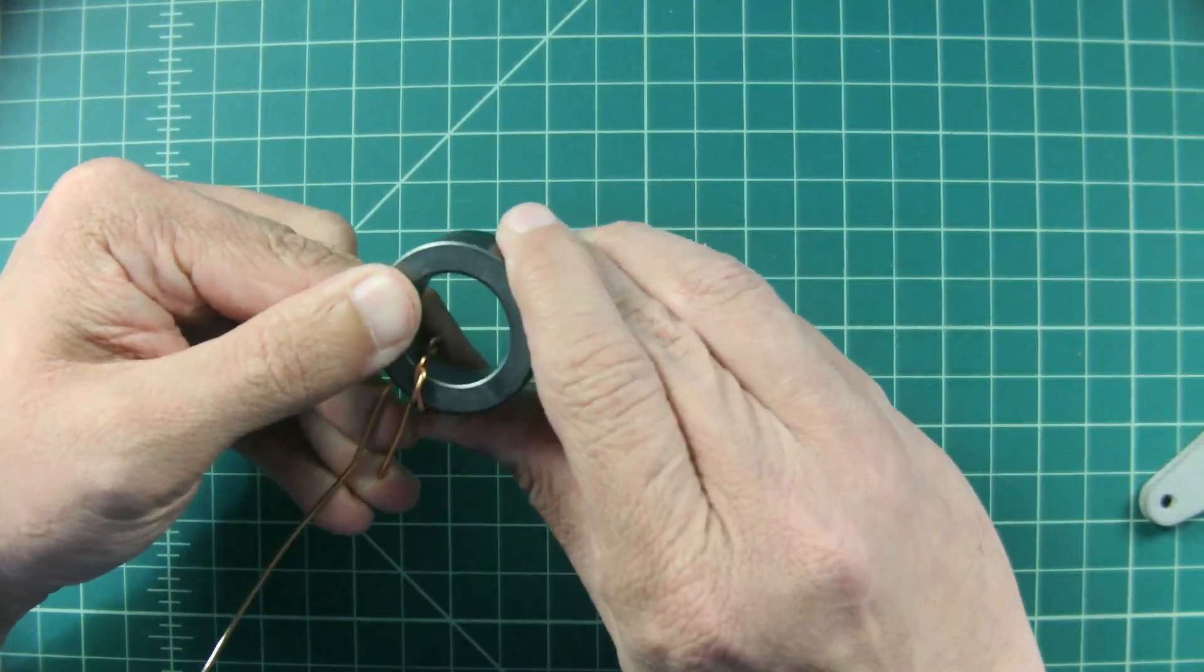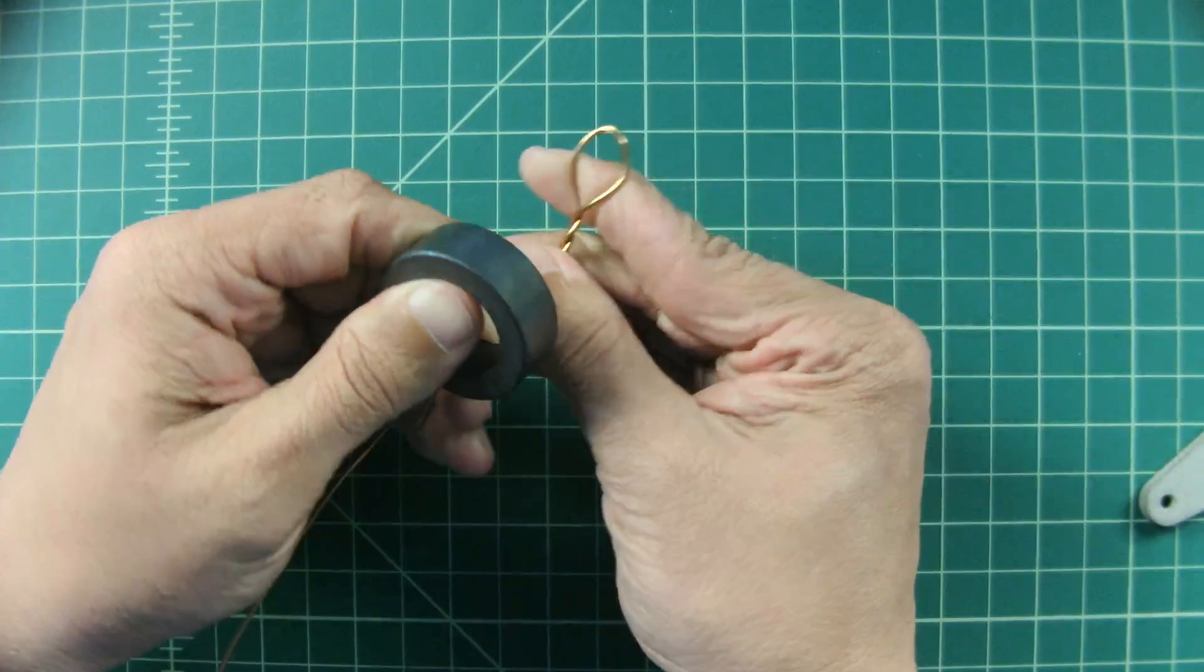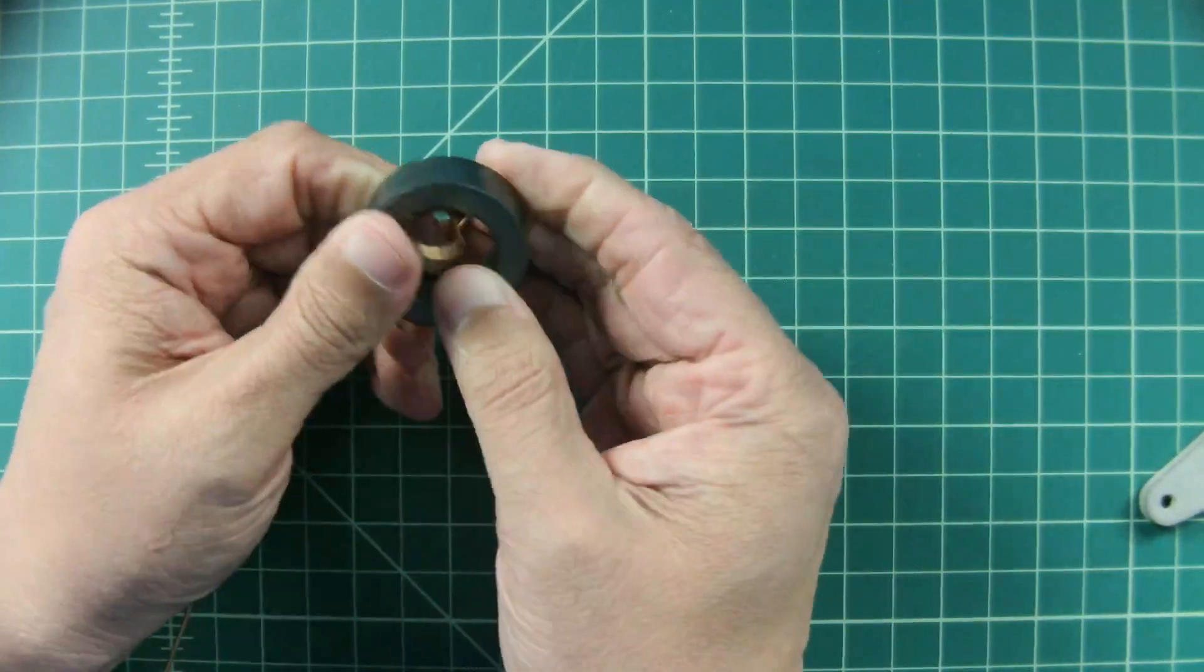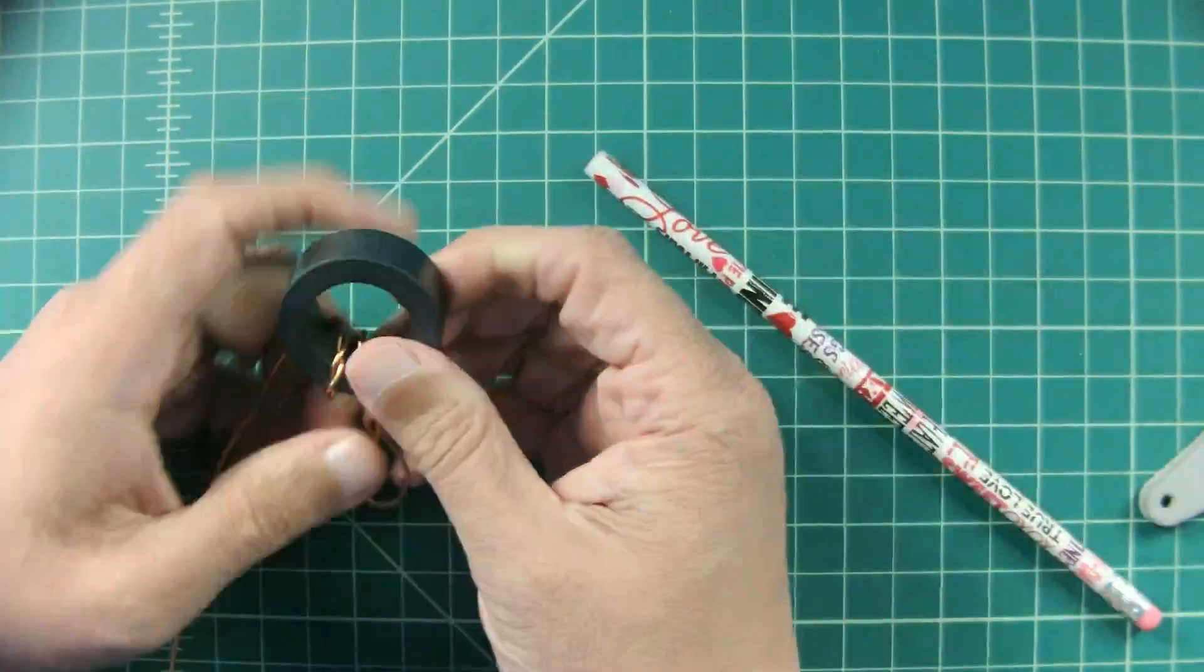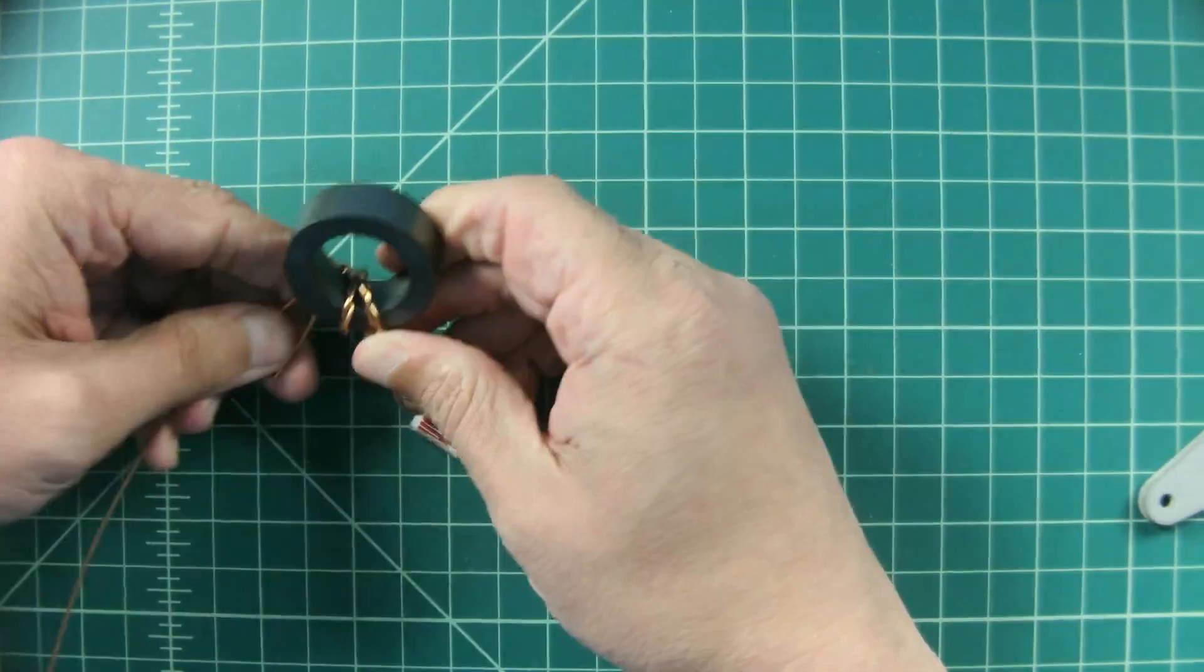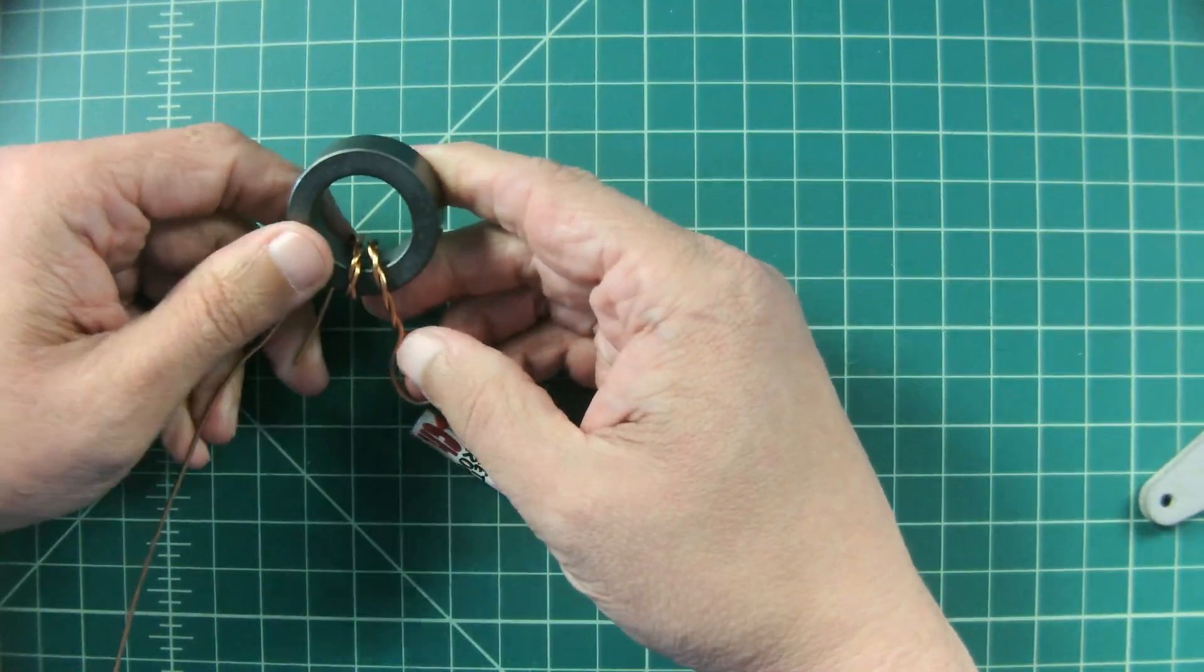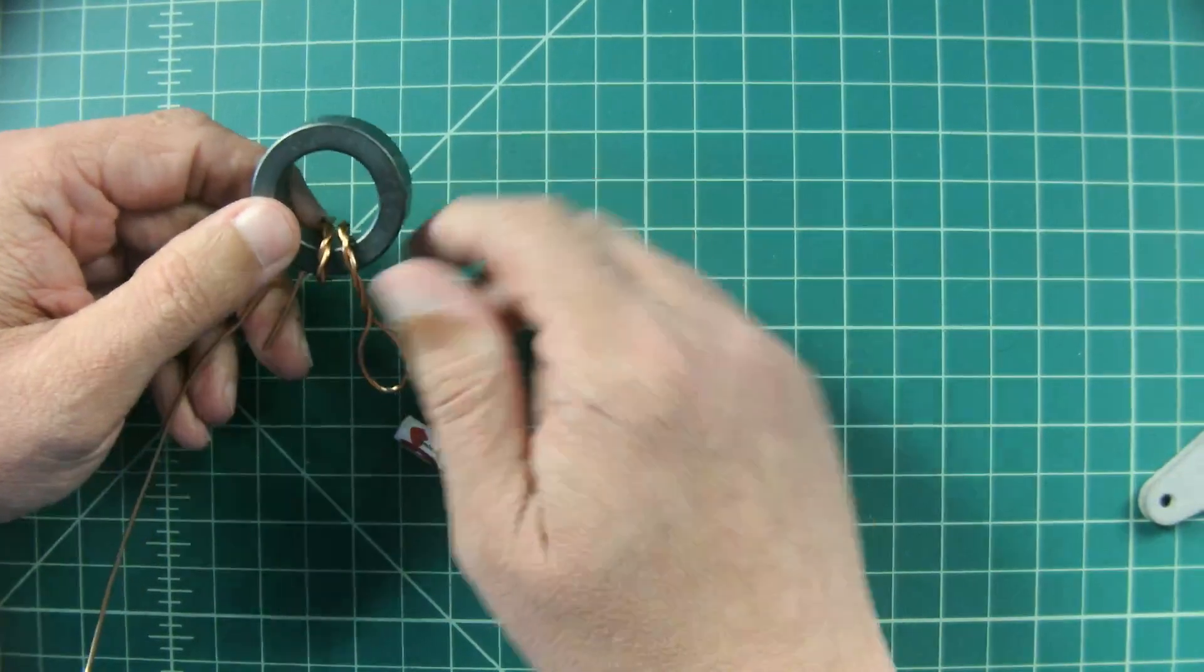Now I want these to be as tight and as close to the toroidal core as possible. What you can see here now is that I have two turns. Every pass through the center of the toroid is a turn.